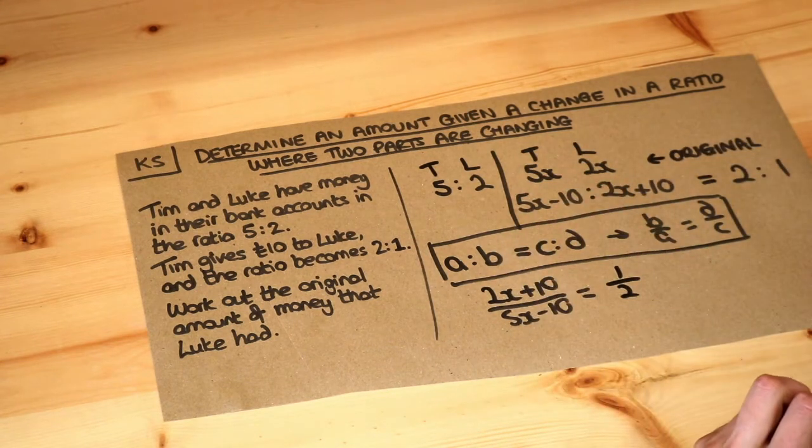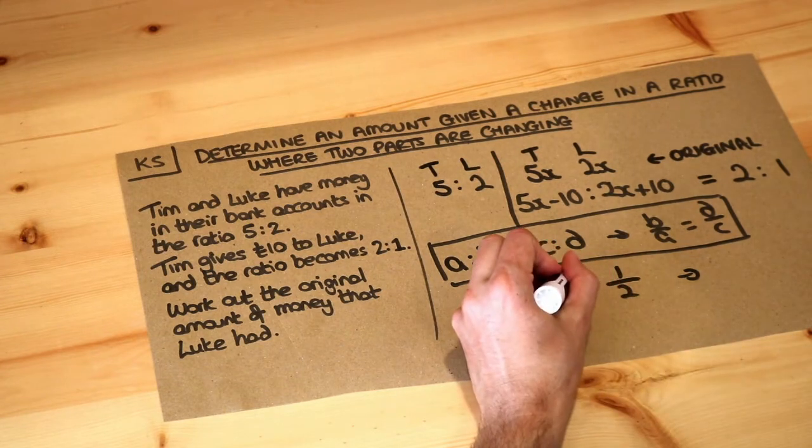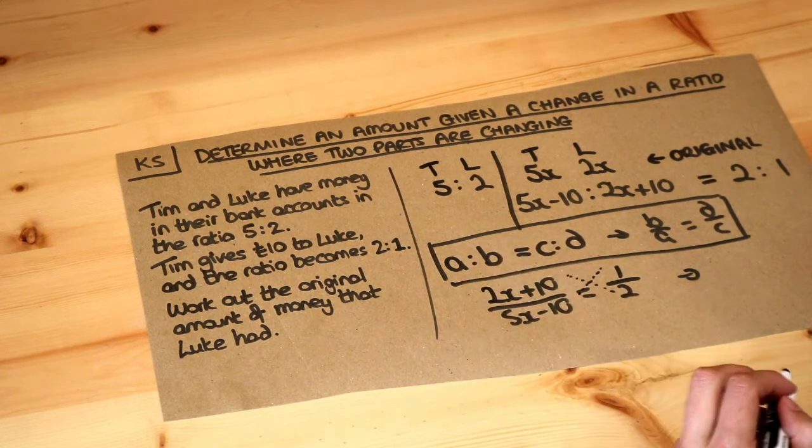So now I've got an equation in terms of x. And remember when you have a fraction equals fraction you can cross multiply. So we can say that times that equals that times that in this kind of cross type fashion.